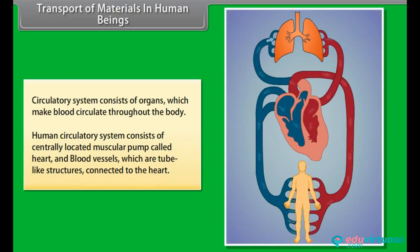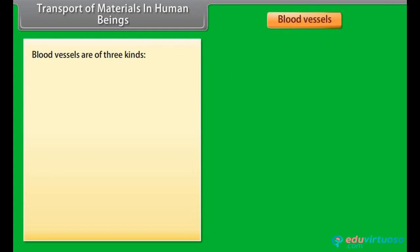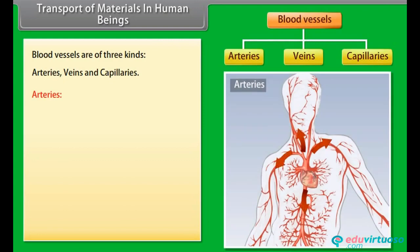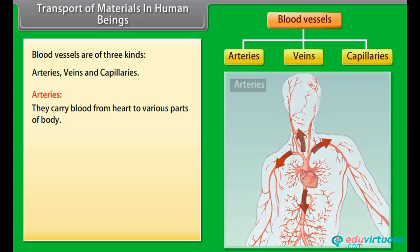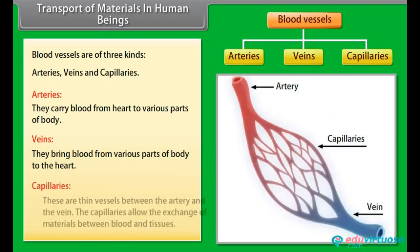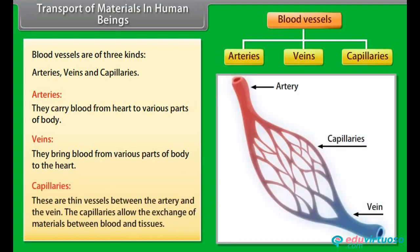The human circulatory system consists of a centrally located muscular pump called the heart, and blood vessels, which are tube-like structures connected to the heart. Blood vessels are of three kinds: arteries, veins and capillaries. Arteries carry blood from the heart to various parts of the body. Veins bring blood from various parts of the body to the heart. Capillaries are thin vessels between the artery and the vein, and allow the exchange of materials between blood and tissues.